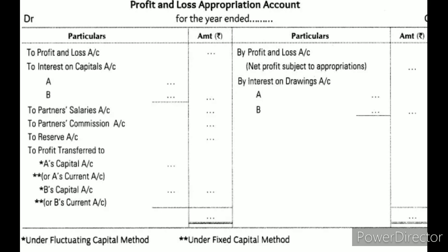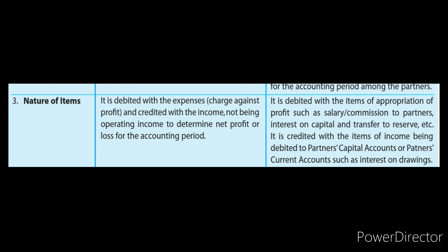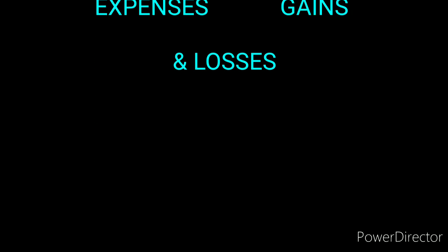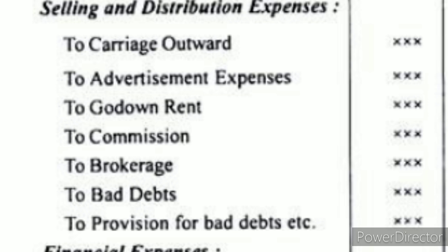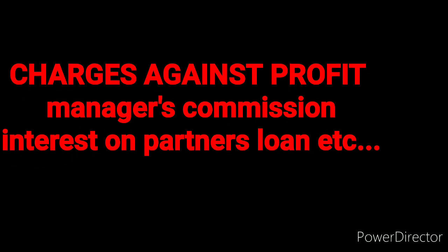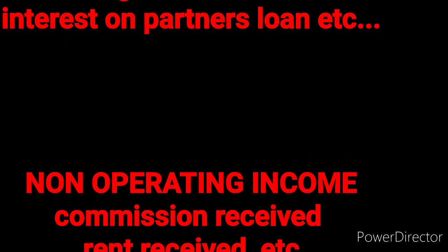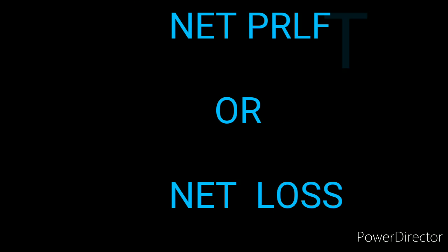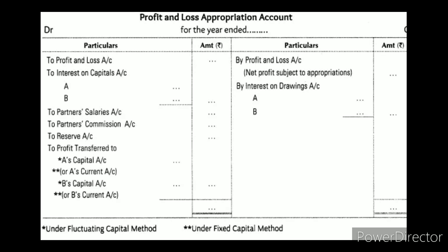Third difference — nature of items. The Profit and Loss Account is debited with expenses and credited with income, following the nominal account rule: debit all expenses, credit all incomes and gains. It is debited with charges against profit — expenses that reduce profit — and credited with income not being operating income, to determine net profit or net loss for the accounting period.